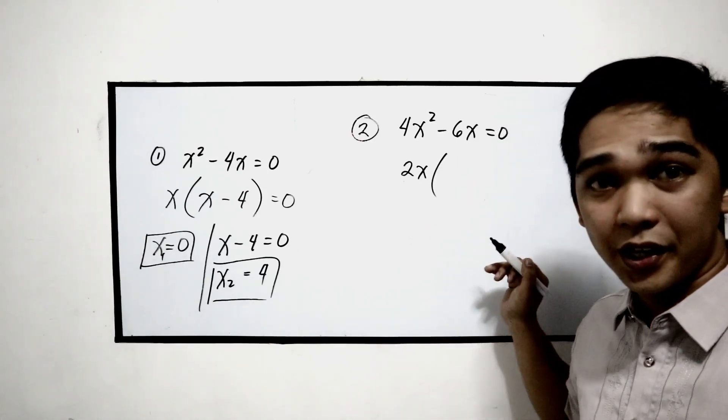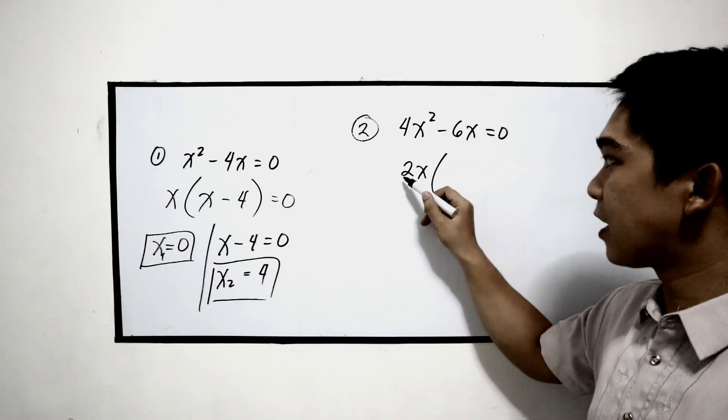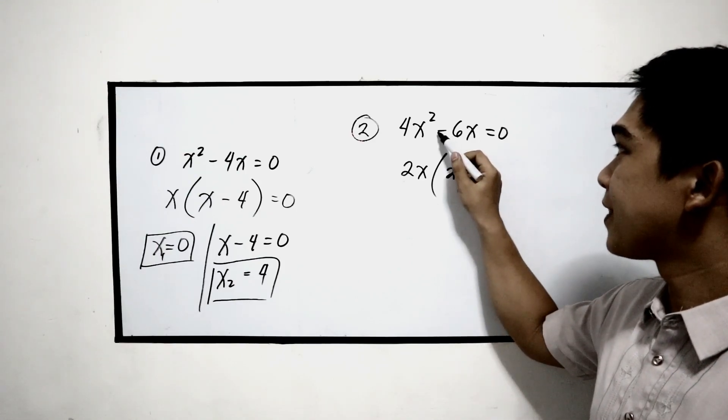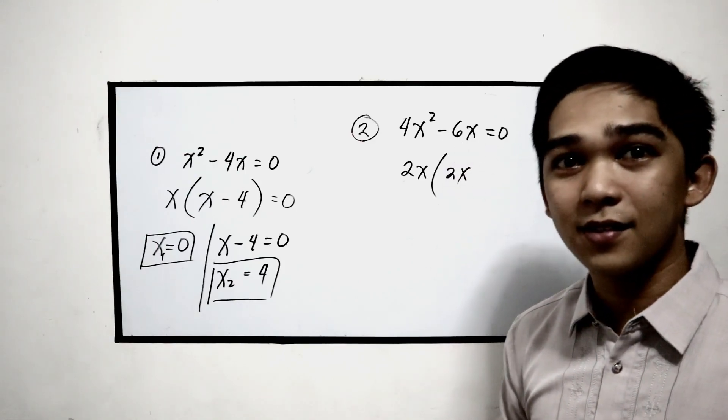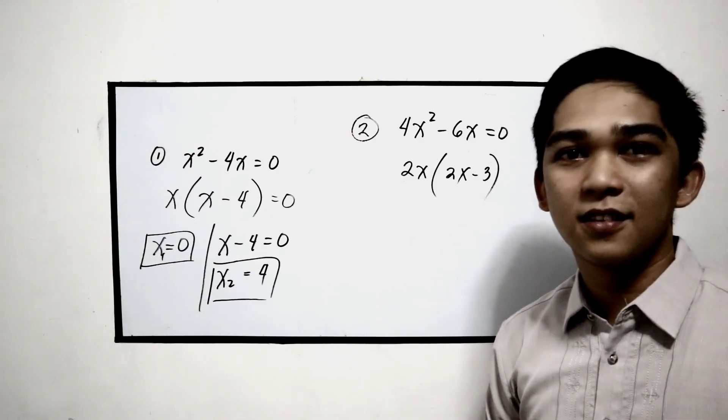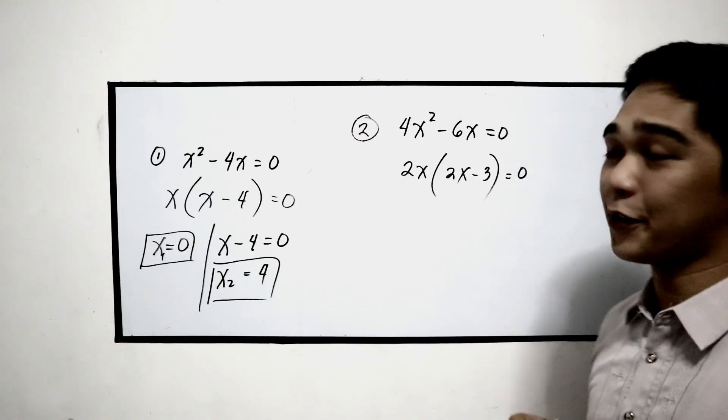To find the other factor, divide 4x squared divided by 2x, that is 2x. Negative 6x divided by 2x, that is negative 3. And now the other factor equals 0.